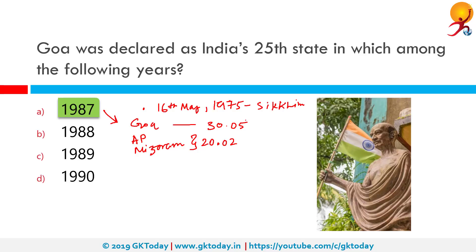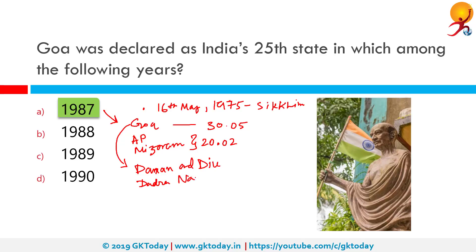Also, Goa's northern exclaves of Daman and Diu and Dadra Nagar Haveli became separate union territories rather than part of Goa state when they joined India.